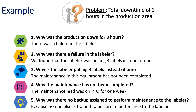This brings us to the second why: why was there a failure in the labeler? By asking this, we found that the labeler was pulling three labels instead of one. Is this a root cause yet? No. So we ask the third question: why is the labeler pulling three labels instead of one? We found that last month's maintenance on the equipment was not completed.